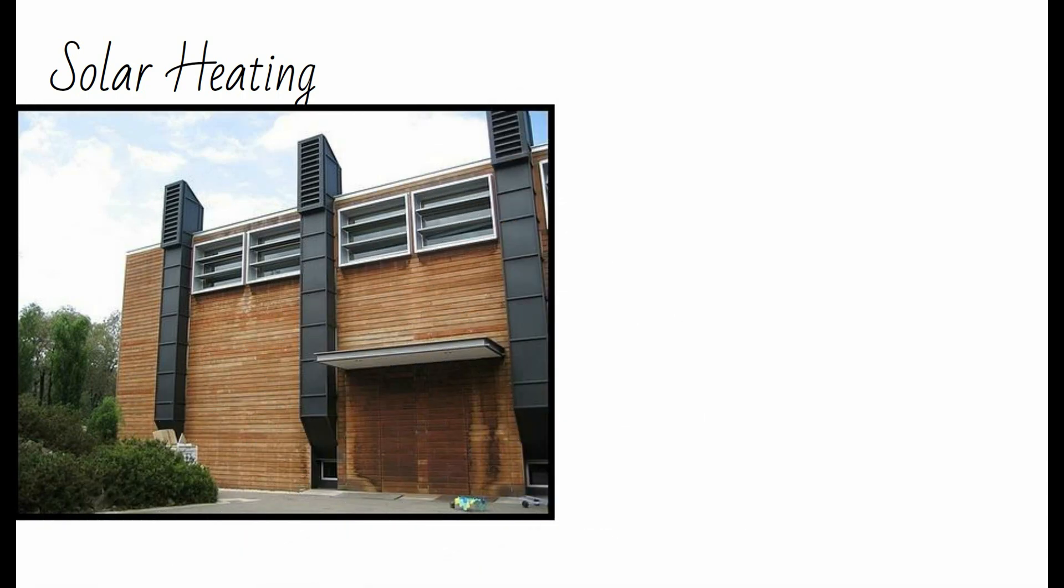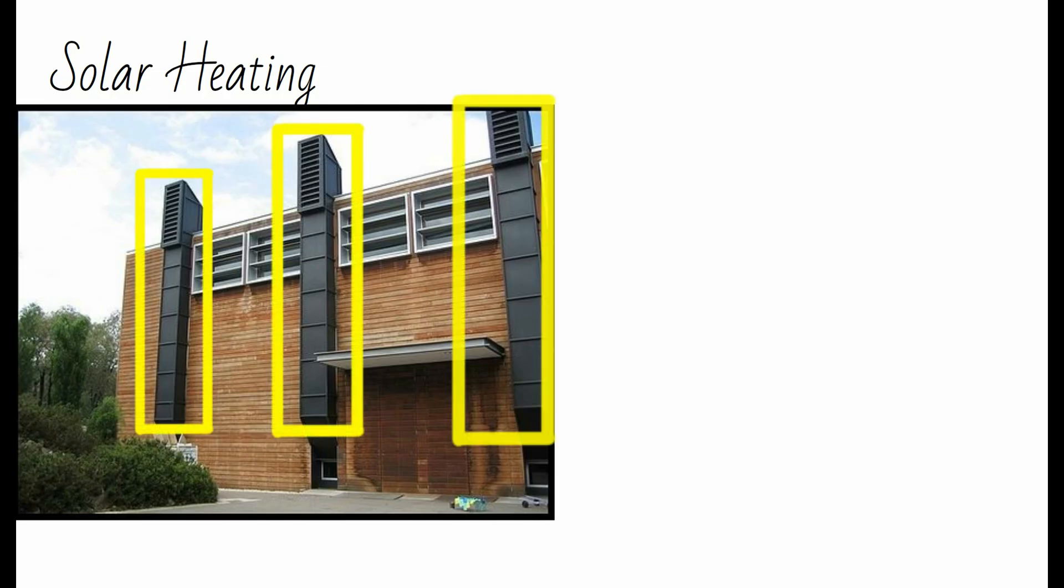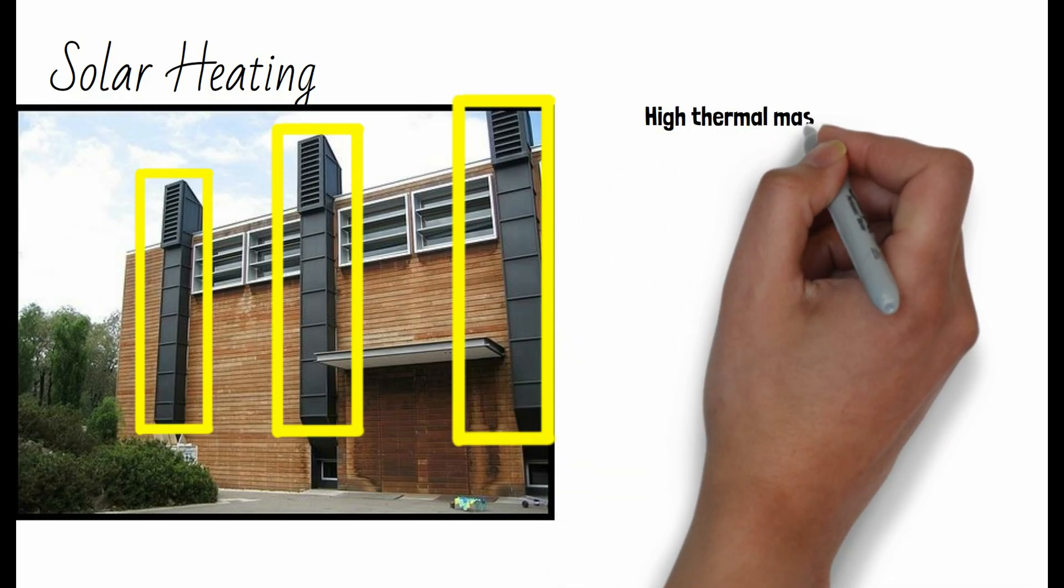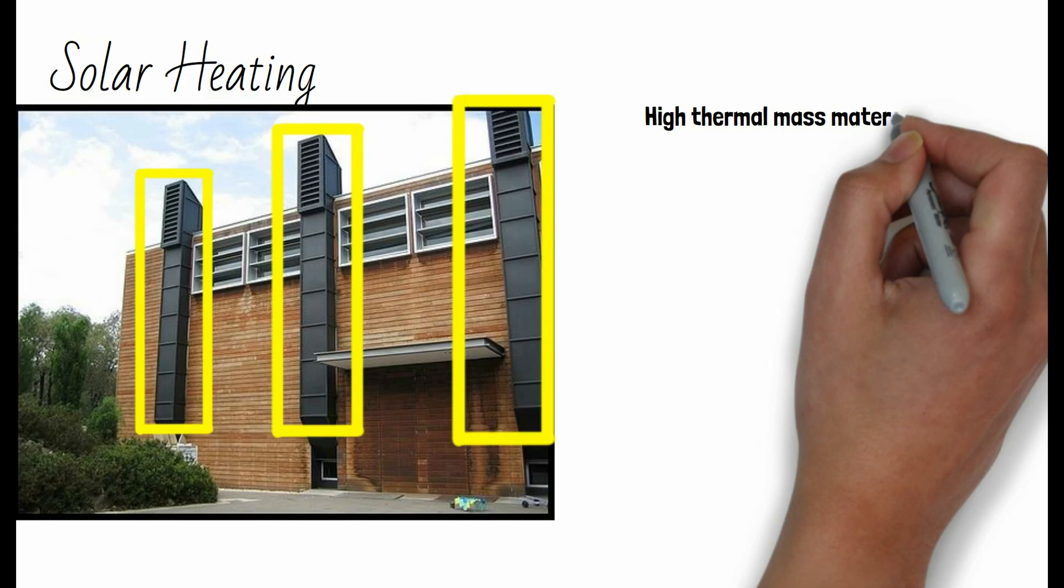Thermal chimneys rely on solar energy to heat the air inside the shaft. They are often constructed with materials that absorb and retain solar radiation, such as dark-colored surfaces or materials with high thermal mass.